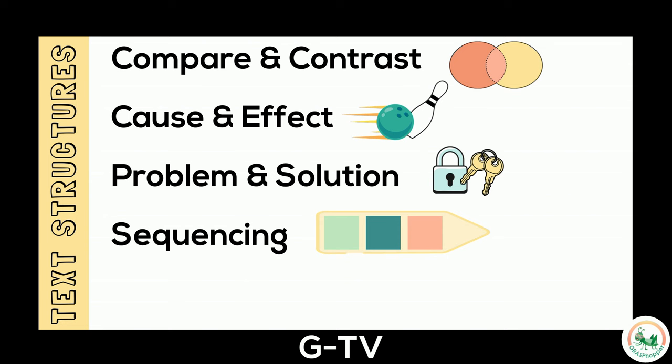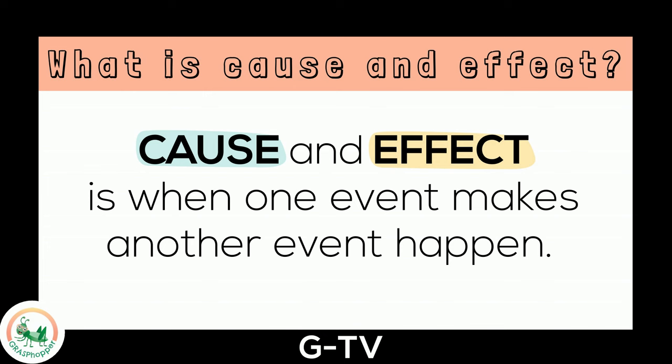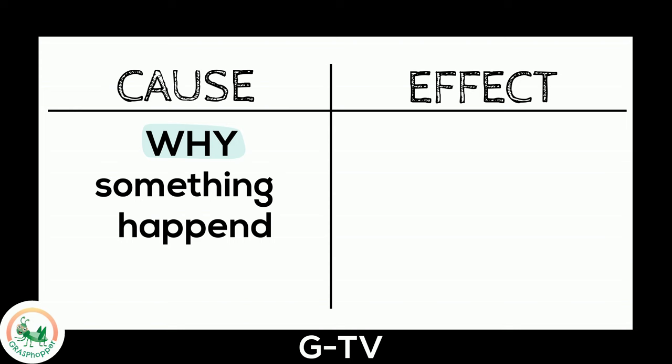Let's zoom in on cause and effect. What is cause and effect? Cause and effect is when one event makes another event happen. When a text is talking about the cause, it is explaining why something happened. And when the text describes the effect, it is telling what happened as a result of the cause.